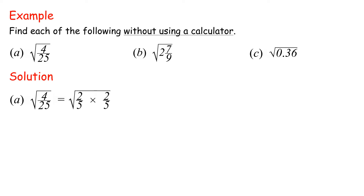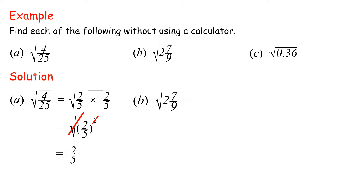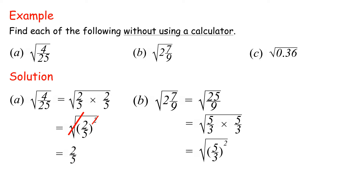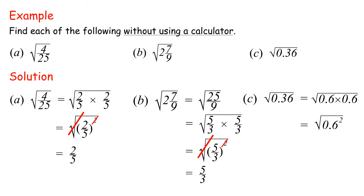Square root of 2 over 5 times 2 over 5 equals square root of 2 over 5 squared equals 2 over 5. B: Square root of 2 and 7 over 9 equals square root of 25 over 9 equals square root of 5 over 3 times 5 over 3 equals square root of 5 over 3 squared equals 5 over 3. C: Square root of 0.36 equals square root of 0.6 times 0.6 equals square root of 0.6 squared equals 0.6.